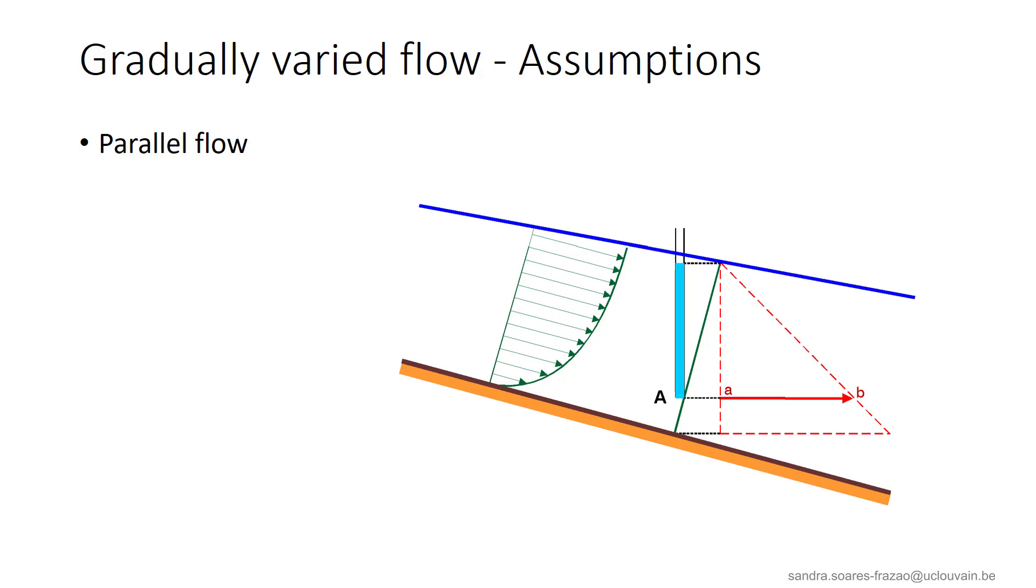What are the assumptions for our gradually varied flow? First, we consider a parallel flow. This might appear as contradictory with the fact that we just said that the bed slope, the water surface and the energy grade line are no longer parallel. However, as the evolution of the flow variables is progressive, we can still consider the flow as parallel.